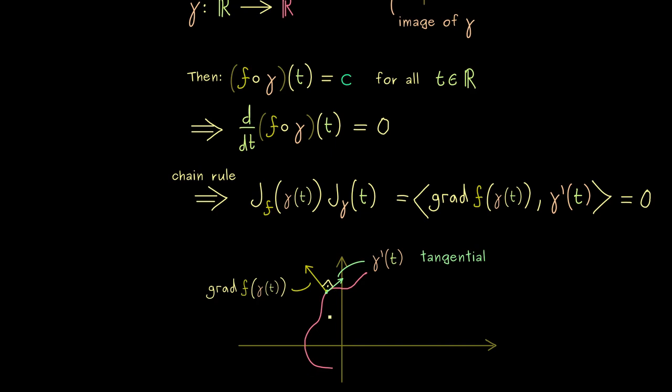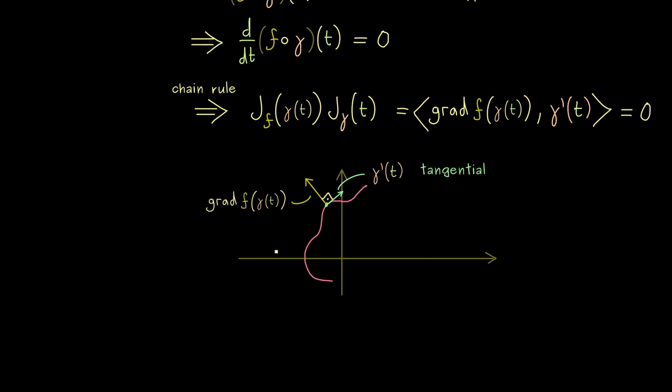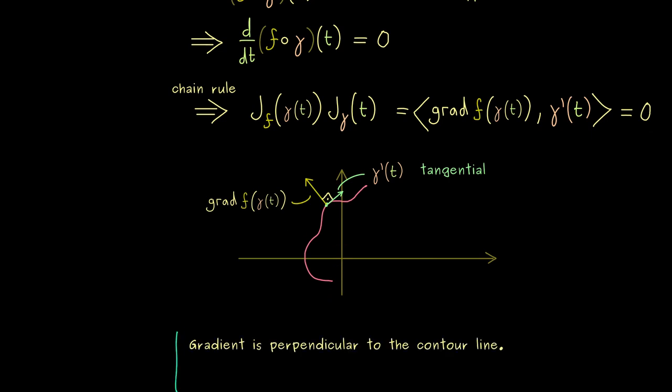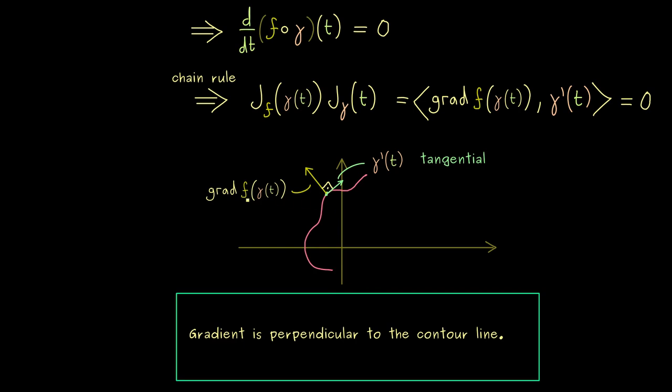And here please recall the curve gamma lies on a contour line of f. In other words we can remember the fact that the gradient is perpendicular to the contour line. So you see if you have a contour line the gradient always points away from it. In fact if you would follow the gradient you would change the values of the function the most.